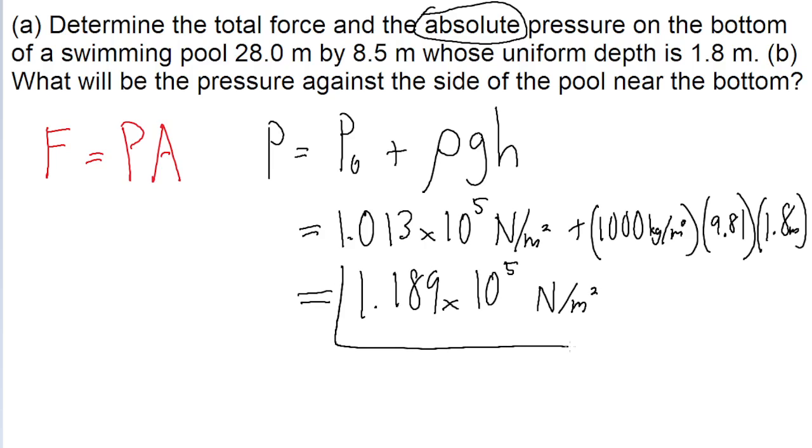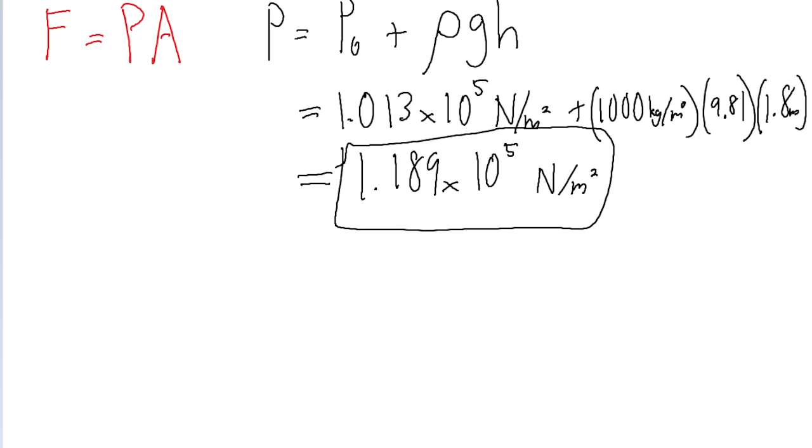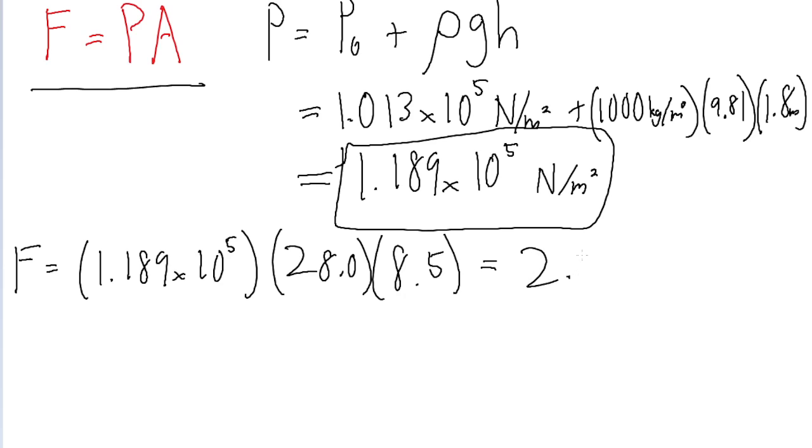So that is our answer for the absolute pressure at the bottom of the pool. But now that we know that pressure, we can use it to find the total force at the bottom of the pool. As we mentioned earlier, the force is equal to the pressure times the surface area. So the force is equal to 1.189 times 10 to the power of 5 newtons per meter squared multiplied by the dimensions of the bottom of the pool, which is 28 meters by 8.5 meters. So we put this into a calculator, and we find a force of 2.8 times 10 to the power of 7 newtons. And so this is the total force at the bottom of the pool.